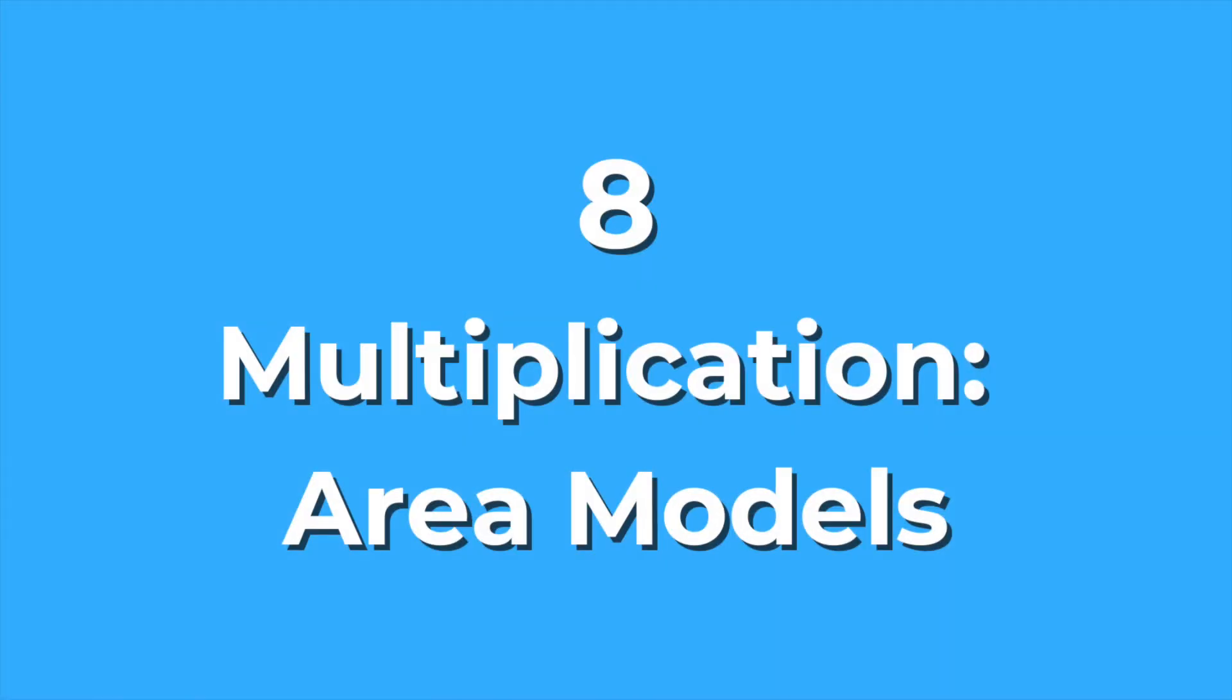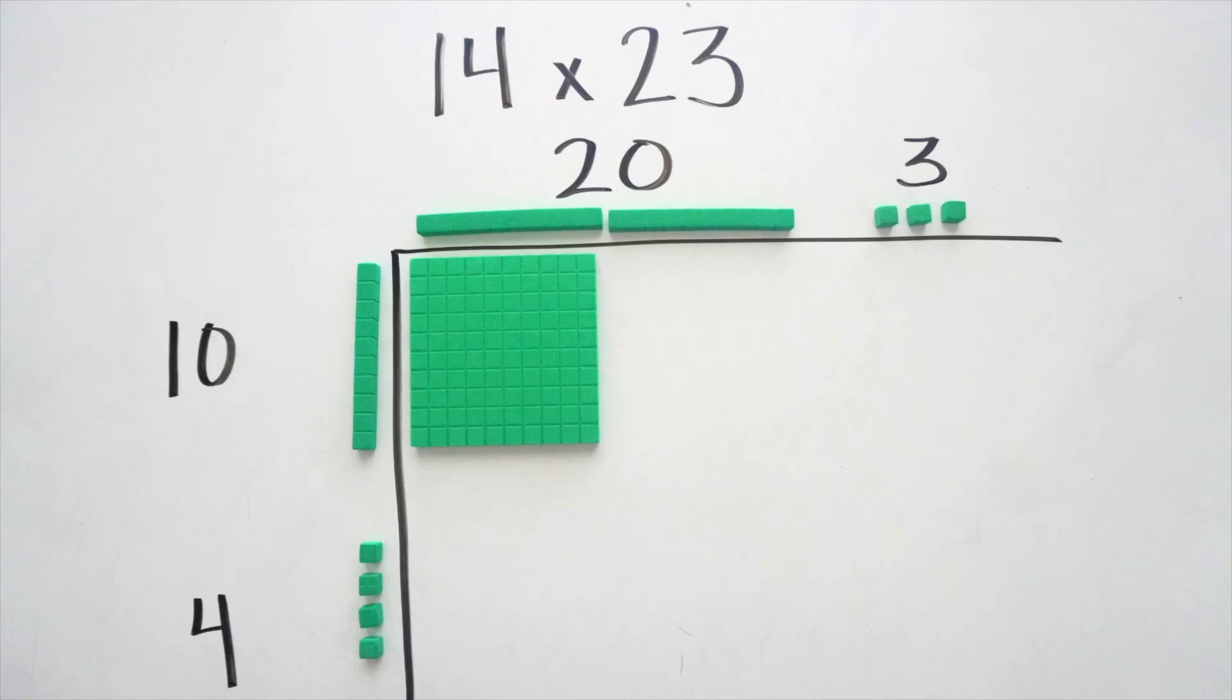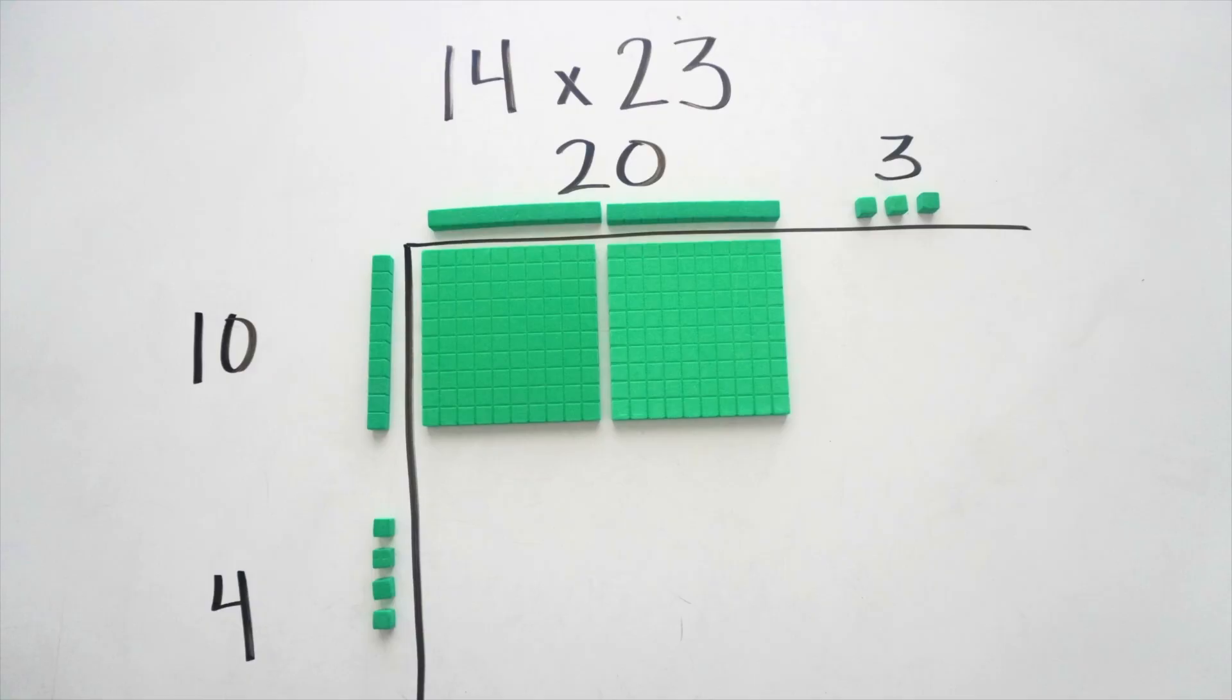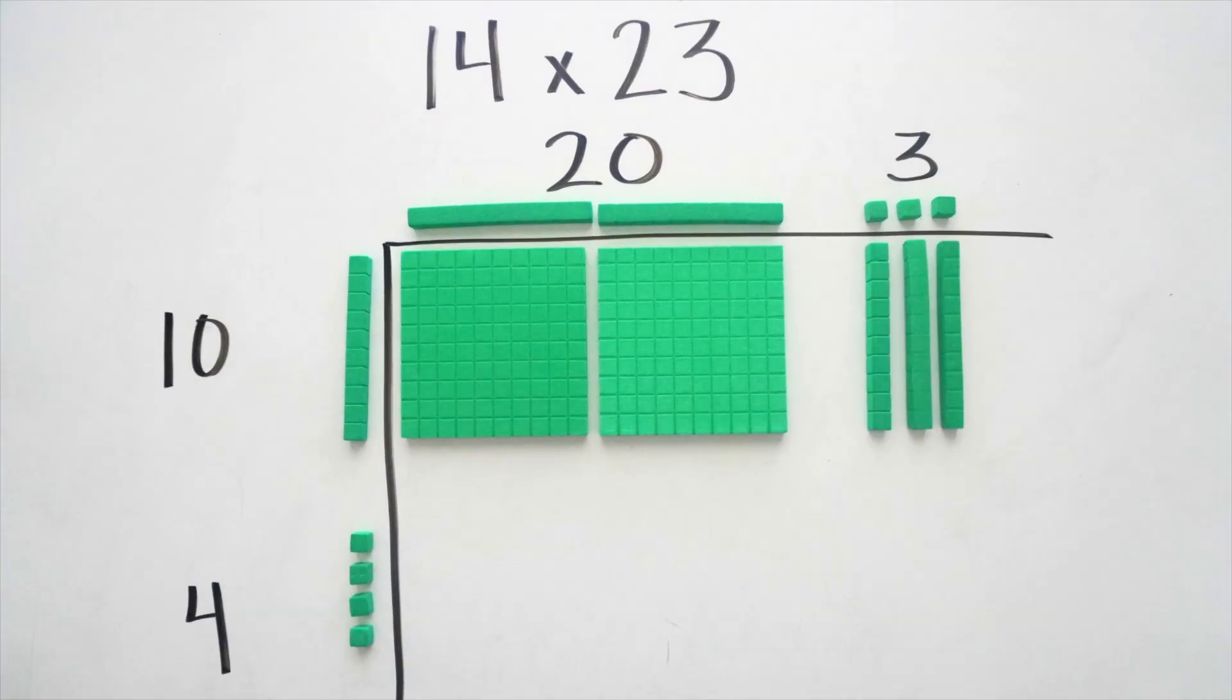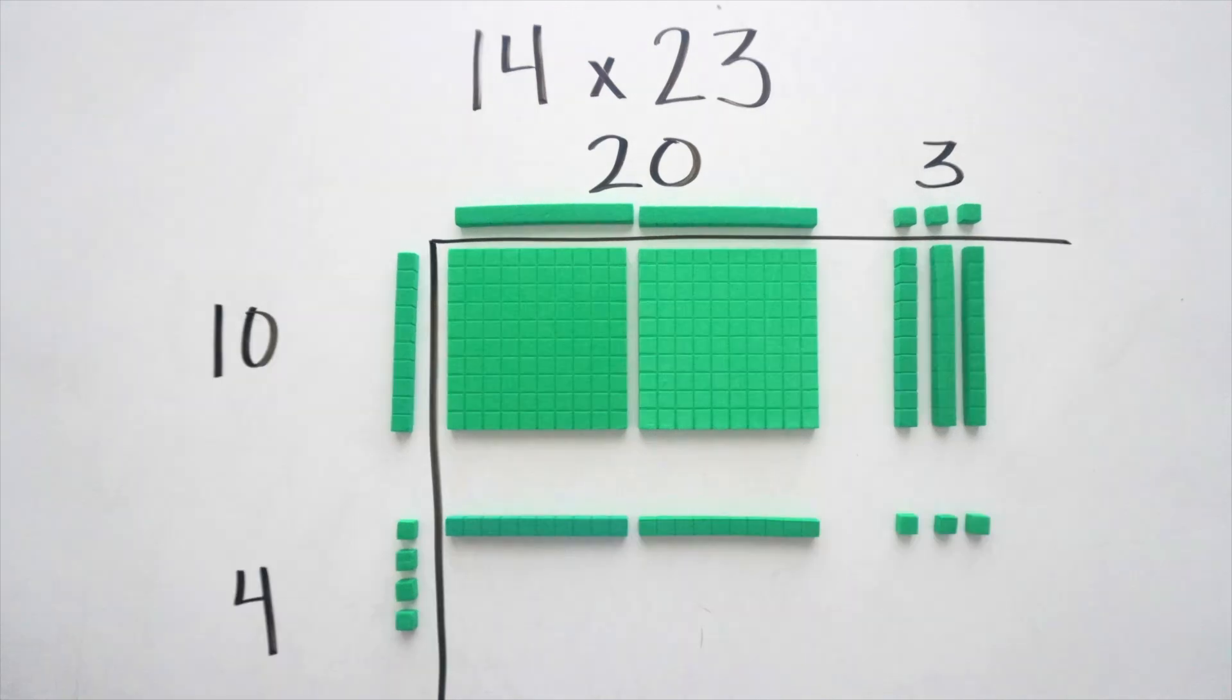Number eight, multiplication with area models. Base-10 blocks make it easy to build a rectangle and then break it apart into smaller sections. Students can see how multiplying by place value, like 10s and 1s,